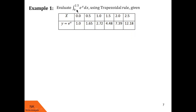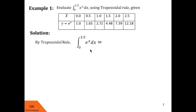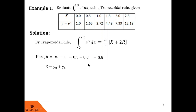In this table, the interval 0 to 2.5 is partitioned into 5 intervals. The first interval is from 0 to 0.5, the second is 0.5 to 1, and so on. The corresponding values of e^x are given below — when we put x equals 0 in e^x we get 1, and when we put 0.5 we get 1.65, and so on. By the trapezoidal rule, the integral of e^x dx over the limit 0 to 2.5 is h/2 into X plus 2R. Here h is x1 minus x0, that is 0.5 minus 0, which equals 0.5. X is the sum of extreme ordinates, y0 plus y5, which is 1 plus 12.18, giving 13.18.